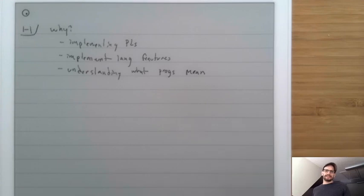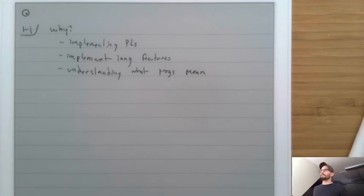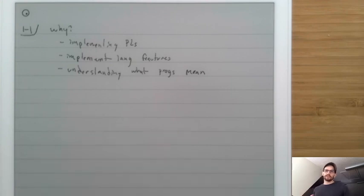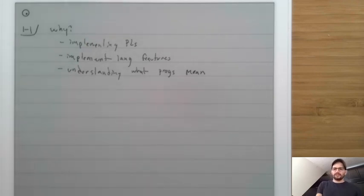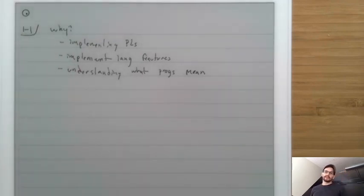Each one tends to use similar tools. When we talk about how to understand what programs mean, we typically mean representing mathematically the behavior of a program so we can predict what it should do before we ever actually run it. If we have a mathematical definition of what it's supposed to do, we can evaluate an actual implementation like a compiler or interpreter to determine whether it has an error. Semantics can also guide the actual implementation of a compiler or interpreter.